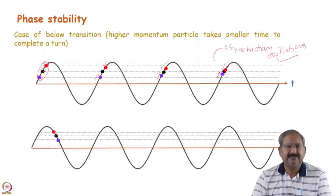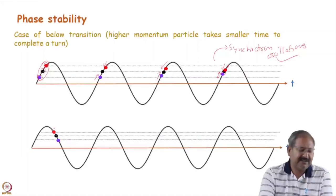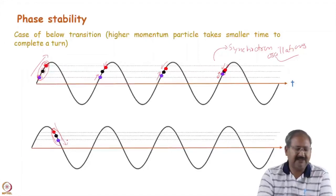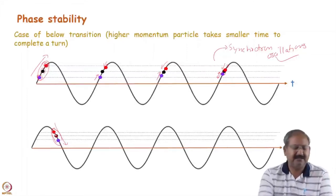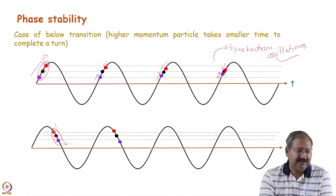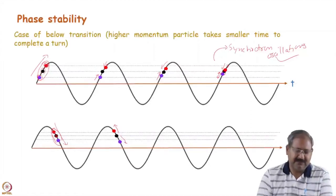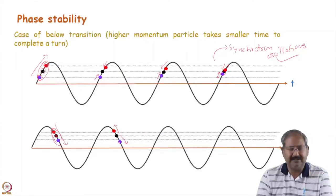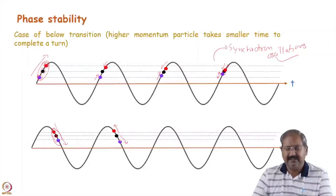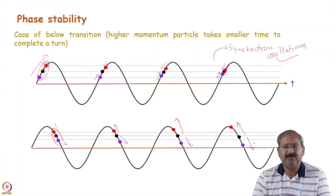Now consider three particles on the falling edge of the RF field — where the synchronous particle still takes the same energy as before, and will arrive at the same phase after one revolution. However, a higher-energy particle arrives early, moving away from the synchronous phase. The same happens for the lower-energy particle. This gap increases turn by turn — it is a defocusing phenomenon and the motion is not stable.